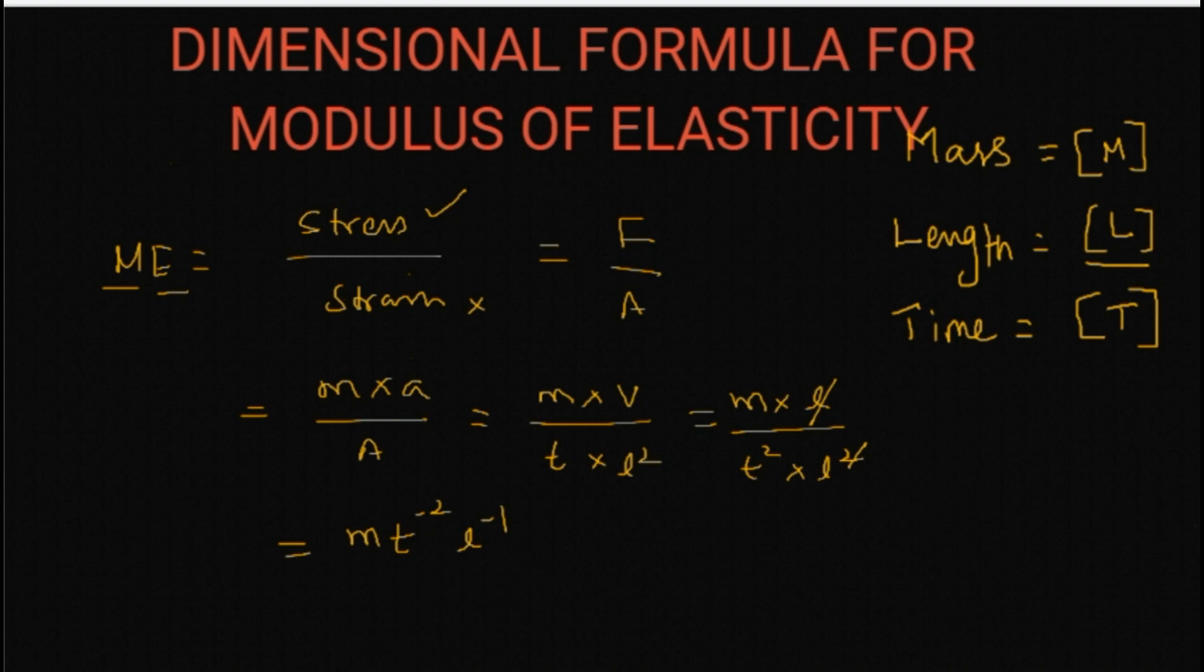If I substitute the dimensional form of mass, time, and length, I get M L power minus 1 T power minus 2, which is similar to the dimension of stress or pressure.